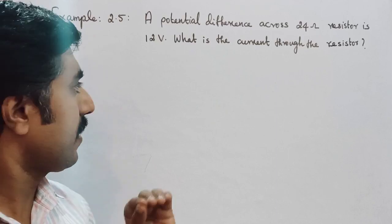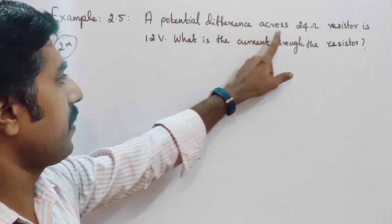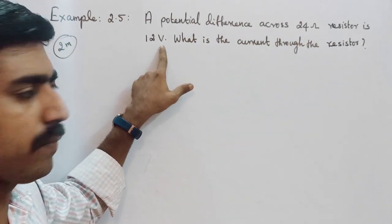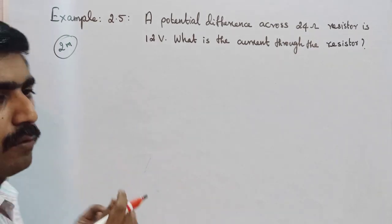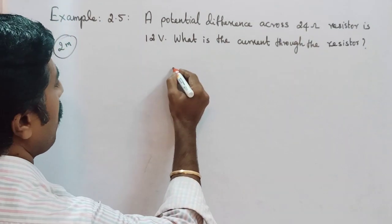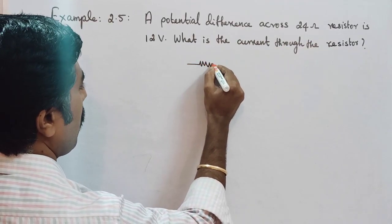Electric current through the resistor. So a potential difference across 24 ohm resistor is 12 volt. First we need to draw a circuit diagram. See, first the resistor. So this is the resistor.